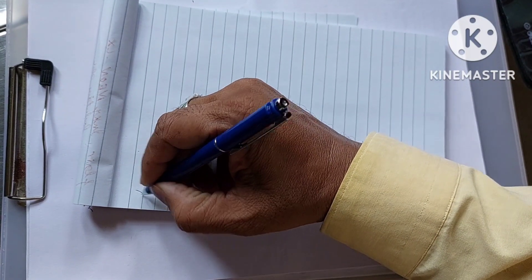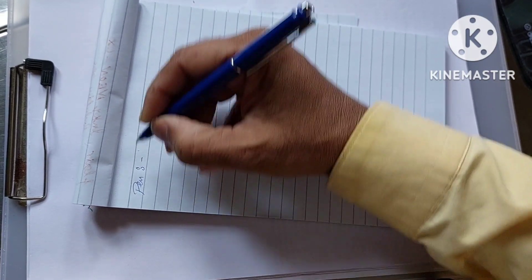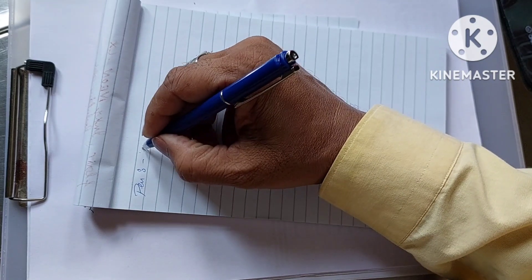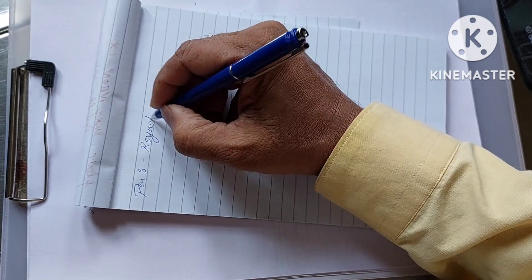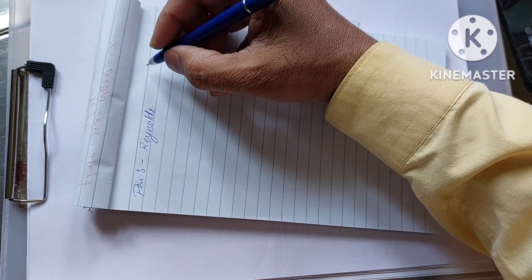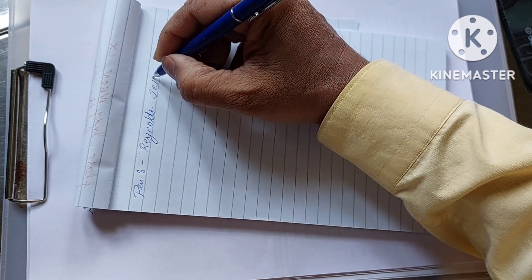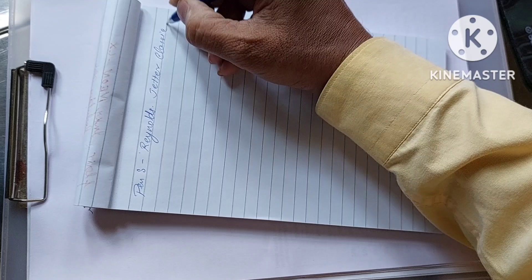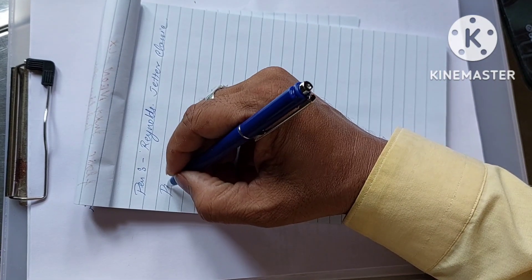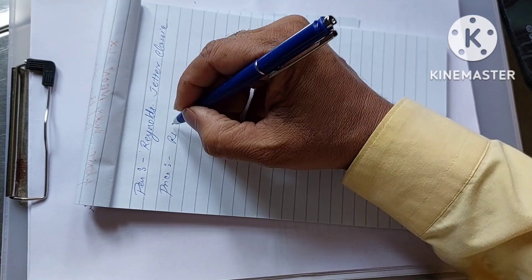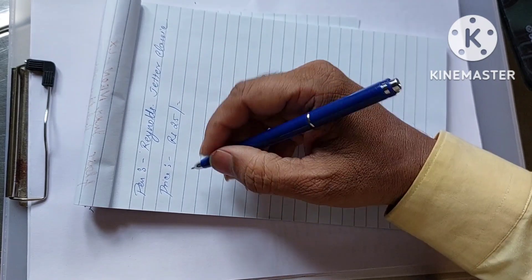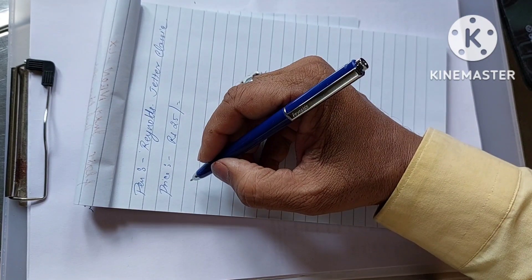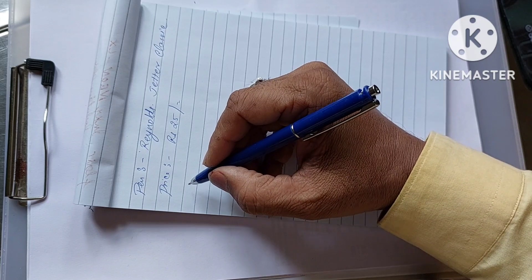So the pen for today is Reynolds Jetter Classic. Price of the pen is 25 rupees and yes, it is writing really smoothly. You can see there is no skip, it is writing very smoothly over the paper.